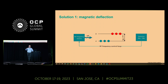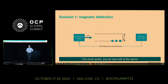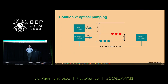There are two solutions. The first is magnetic deflection, which has been the implementation in the market since 1967 when the first commercial caesium clock came to market. As you can see in the diagram, we overcome the problem by eliminating half of the atoms — one of the two states — so you can do the measurement, but you are losing half of the atoms.